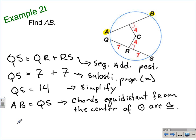And so, finally, using the substitution property again, the substitution property of equality, we know that the measure of AB is equal to 14.